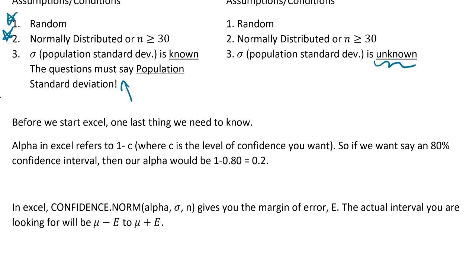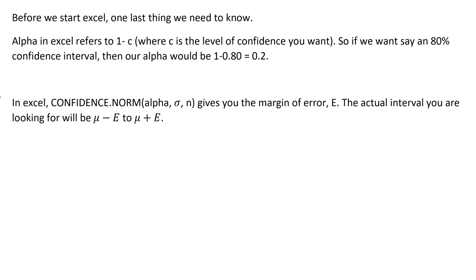Excel uses alpha. Alpha just means you use one minus the level of confidence that you want. For example, if you want an 80% confidence level, your alpha would be 1 minus 0.8, which is 0.2. Remember, we can't use the percentage — we have to use it as a decimal — so it's 1 minus 0.8, giving us 0.2.